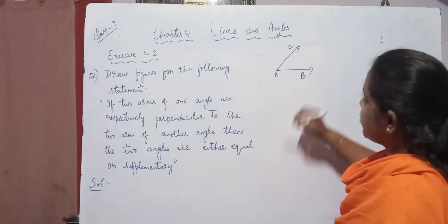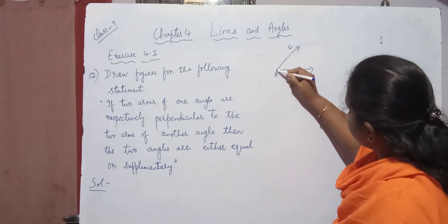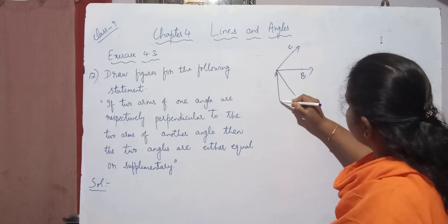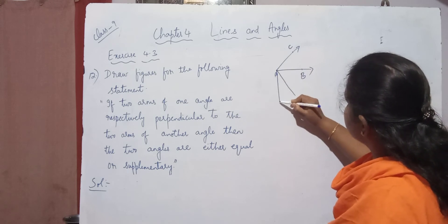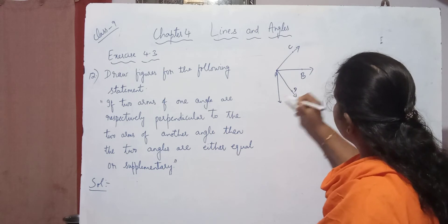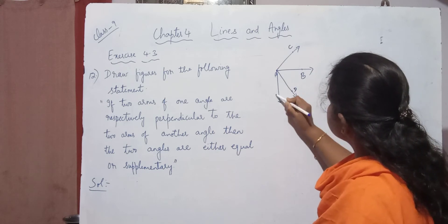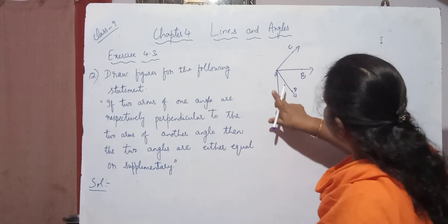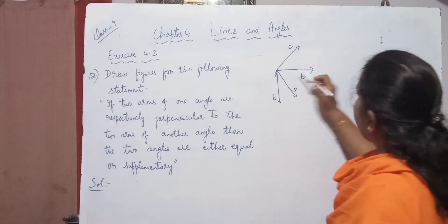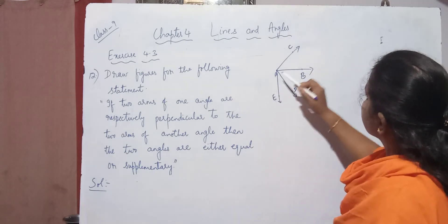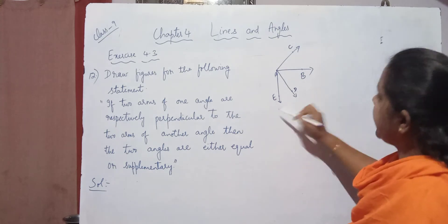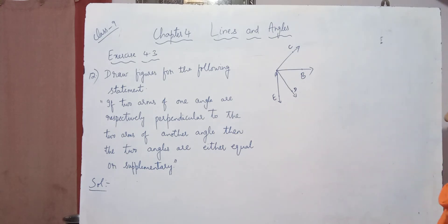Then I am drawing one more angle. I am drawing the angle like this. I am taking this as some D and this as E. So here the two angles are angle CAB and angle DAE. These are the two angles which I am drawing.